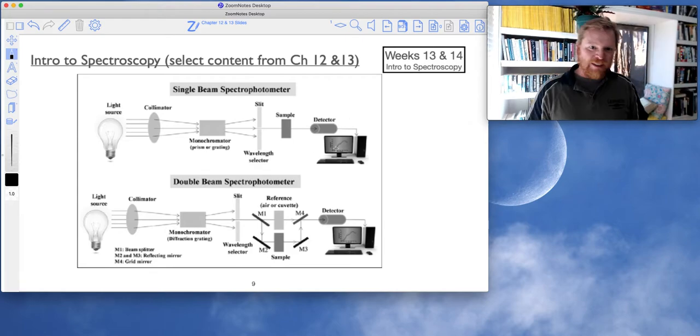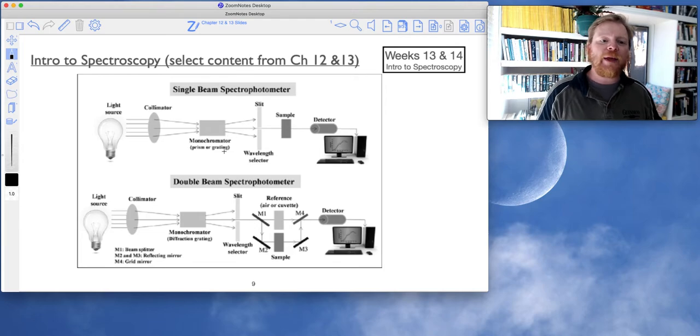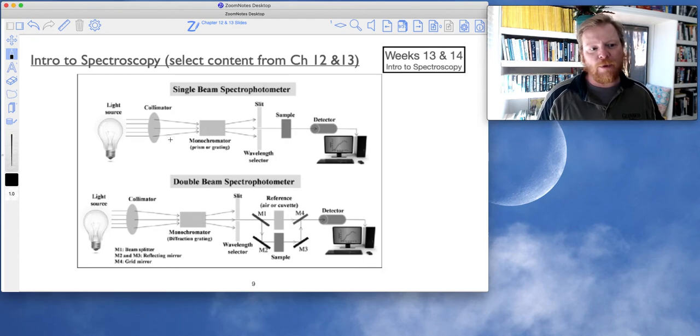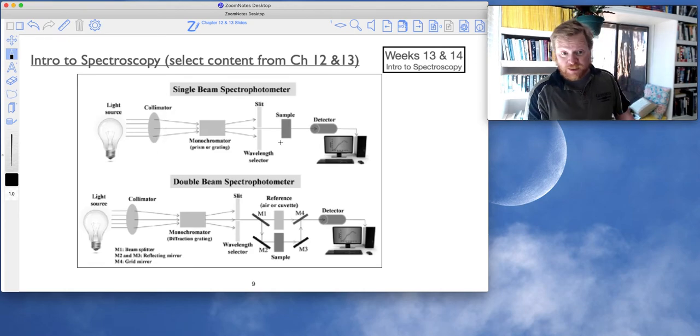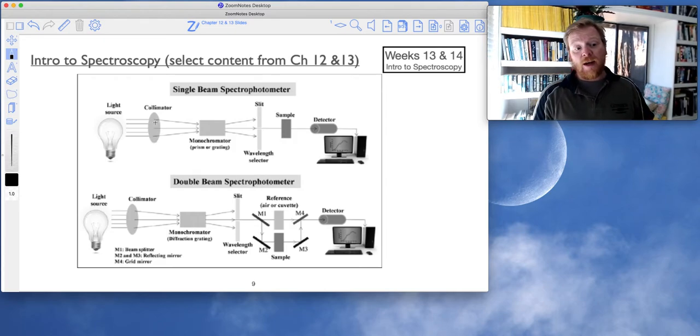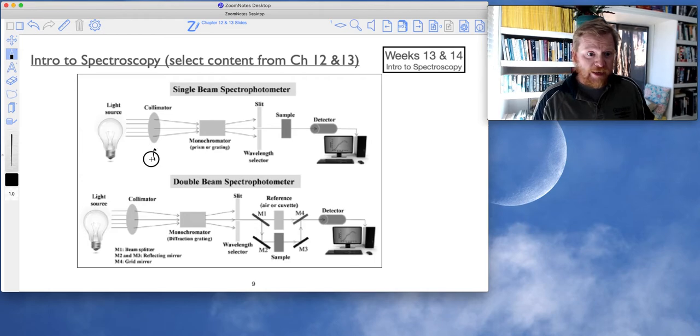So we can have single beam spectrometers or double beam. Single beam are by far the most common because they're the easiest to construct. And in a single beam spectrometer, we have a light source with some type of collimator. So that could be a slit like you see right here, or it could be a set of optics that can focus the beam down onto our monochromator.